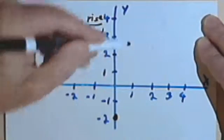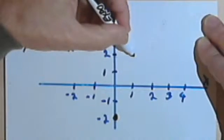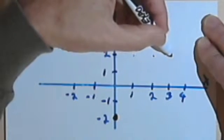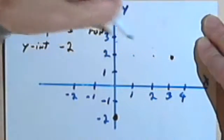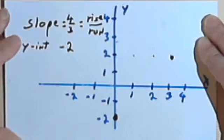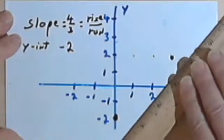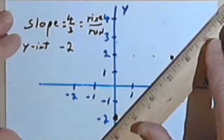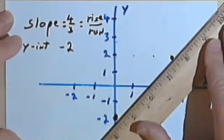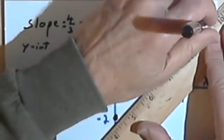Our run is 3, so I want to go over 3, so 1, 2, 3. This works a lot better if you have real graph paper. And then all we do is take a straight edge and connect our two dots.